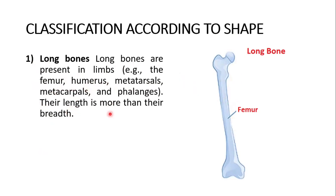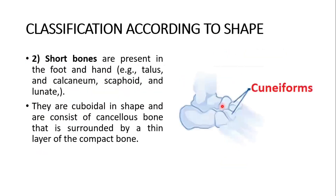Long bones have a length greater than their breadth. Short bones — you can see the cuneiforms — are present in the foot and hand. Examples include the talus, calcaneum, scaphoid, and lunate. The scaphoid and lunate are carpal bones present in the upper limb. They are cuboidal in shape and consist of cancellous bone surrounded by a thin layer of compact bone.